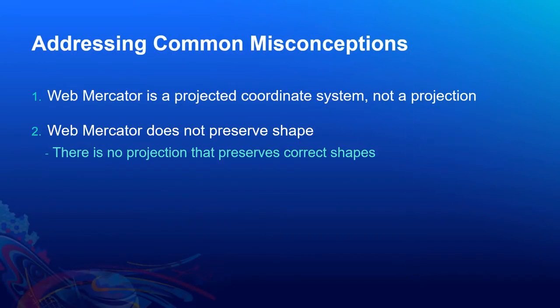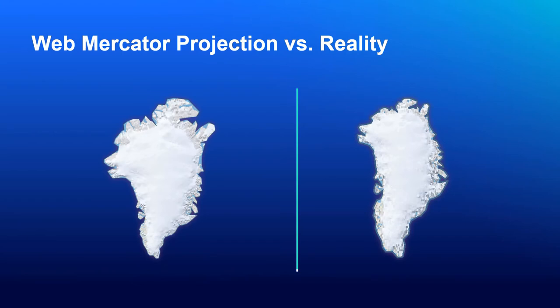Next misconception, Web Mercator does not preserve shape. Actually, there is no projection that does that. On the slide I have an example of Greenland. On the left we have Greenland as it appears in Web Mercator and on the right there is more realistic shape of the island. On Web Mercator, northern part of Greenland is stretched in east to west direction compared to more realistic shape on the right. It looks like a northern part of Greenland went through some explosion. It is blown up. Basically, those two shapes of the island are not the same. Therefore, Web Mercator clearly does not preserve shapes.